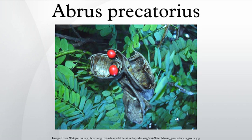Abrus precatorius, called Kundumani in Tamil and Gauravinda Ginja in Telugu, has been used in Siddha medicine for centuries. The Tamil Siddhas knew about the toxic effects in plants and suggested various methods called Suthisuthil, or purification. This is done by boiling the seeds in milk and then drying them. The protein is denatured when subjected to high temperatures, which removes its toxicity.